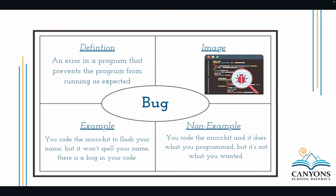A bug is going to happen a lot when they are first learning how to program, and in fact it's going to happen a lot even after they get good because they'll get more complex. A bug is an error in the program that prevents it from running as expected — for example, if they're trying to have the micro:bit randomize a number and it puts a zero every single time, they know they have a bug.